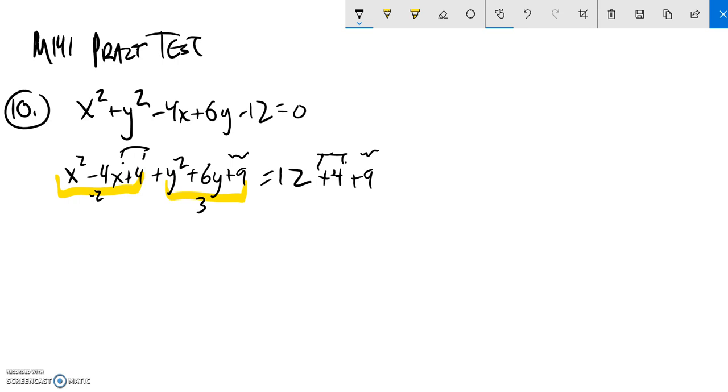What that does for me is these x terms right here I can rewrite as (x - 2) quantity squared. These y terms I can write as (y + 3) quantity squared. Then I add these together to get 25, and I see that I have a circle with a center at (2, -3) and a radius of 5. So I go five in both directions from my center.